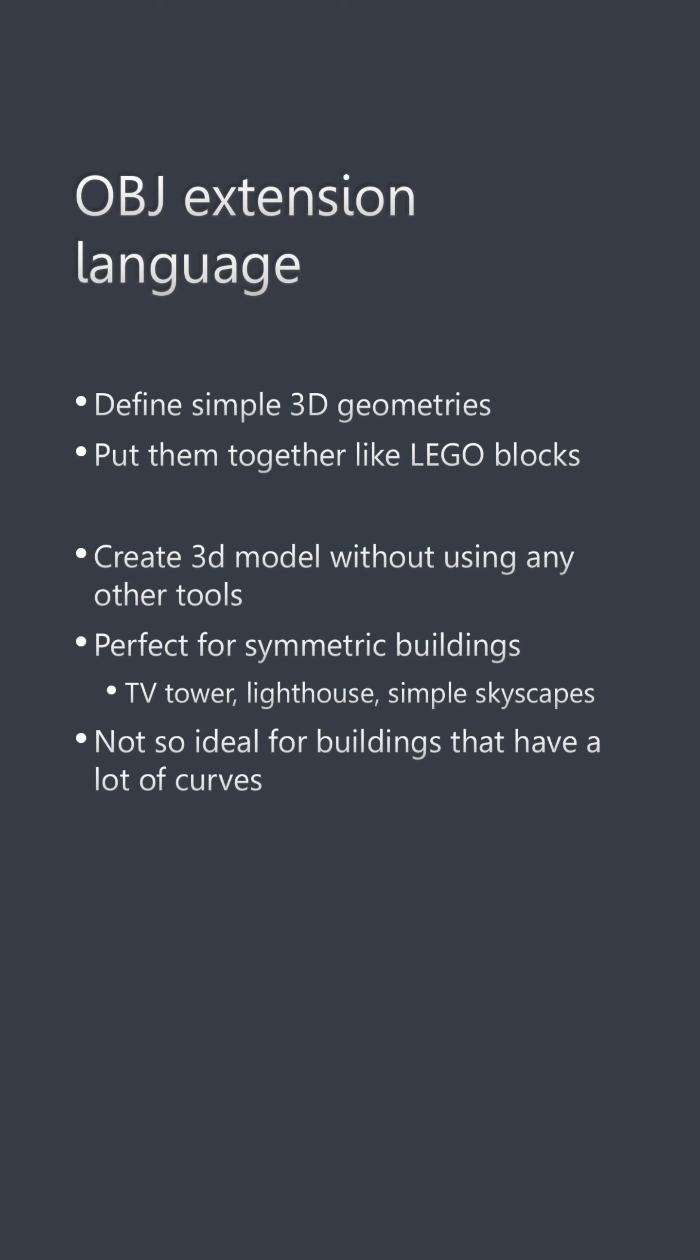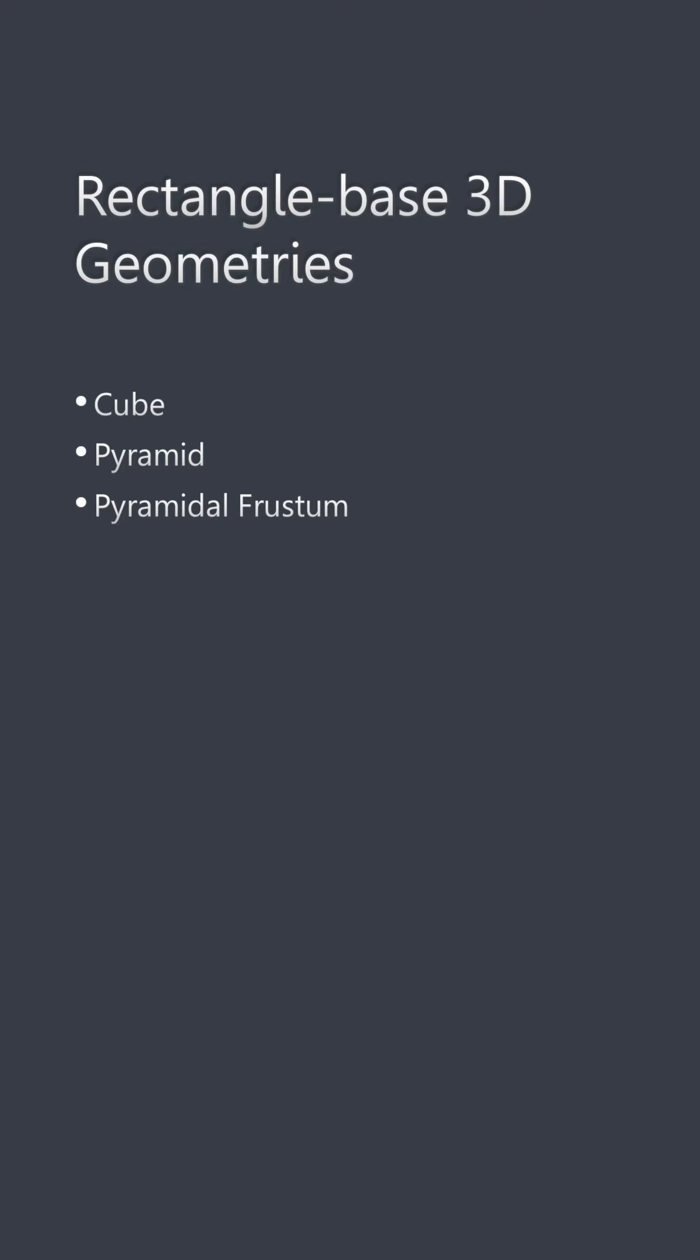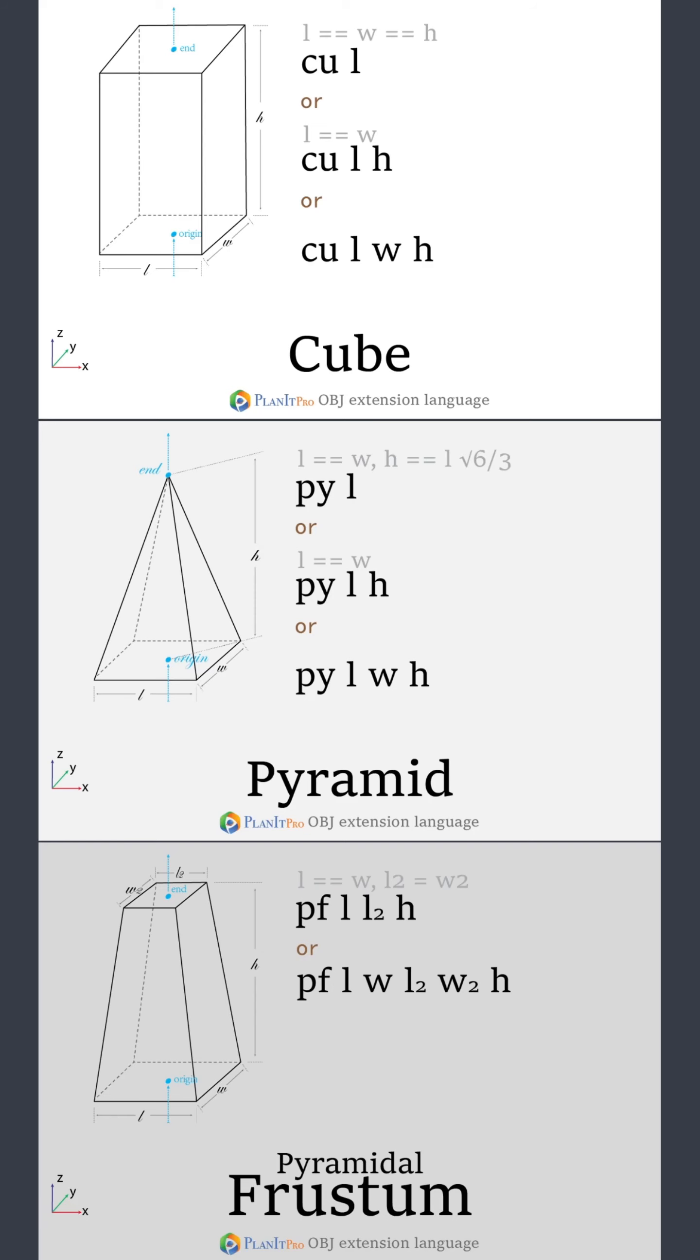So let's take a look at what 3D geometries are available. The first set are geometries with a rectangular base such as a cube, a pyramid, or a pyramidal frustum. Here's the name of the geometry. The picture of it is here. Then you can find out how to define each geometry over here.